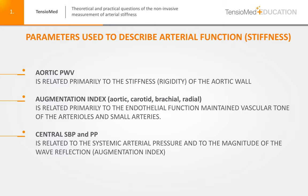The next index is the augmentation index, which can be measured on the aorta, on the carotid artery, and on the brachial or radial artery. However, the augmentation index differs from the aortic pulse wave velocity because it is not a stiffness parameter — it is not directly related to the aortic wall characteristics. The aortic augmentation index is mainly related to endothelial function, vascular resistance, and vascular tone of the arterioles and small arteries.